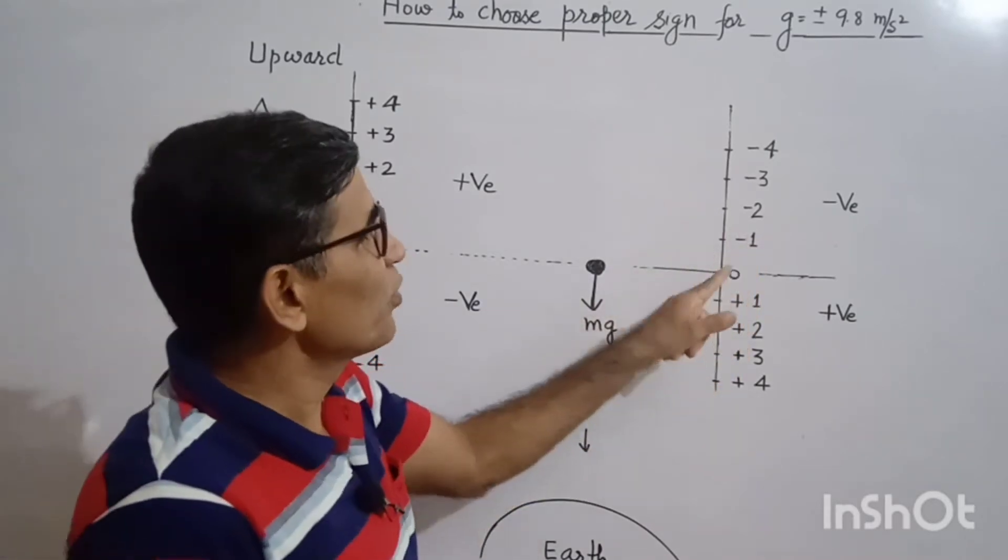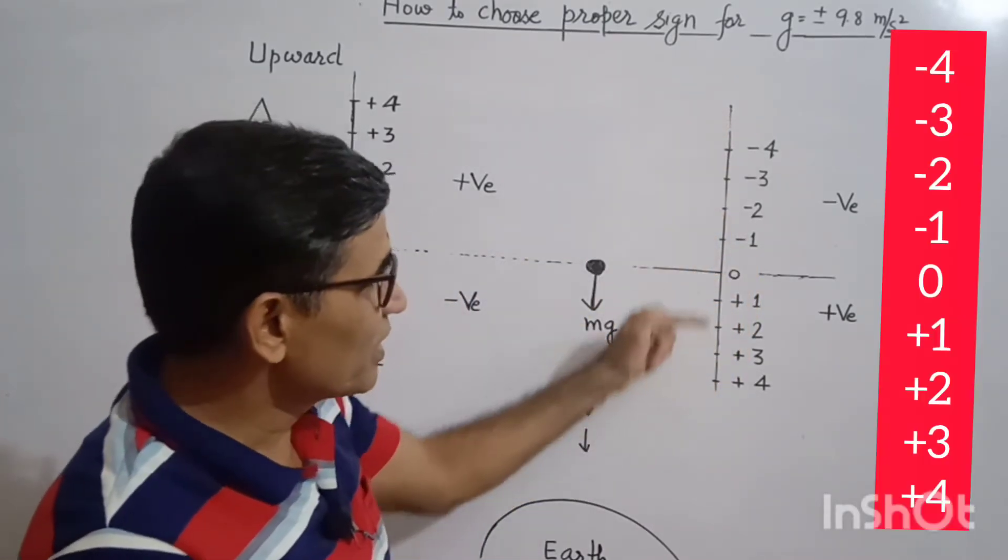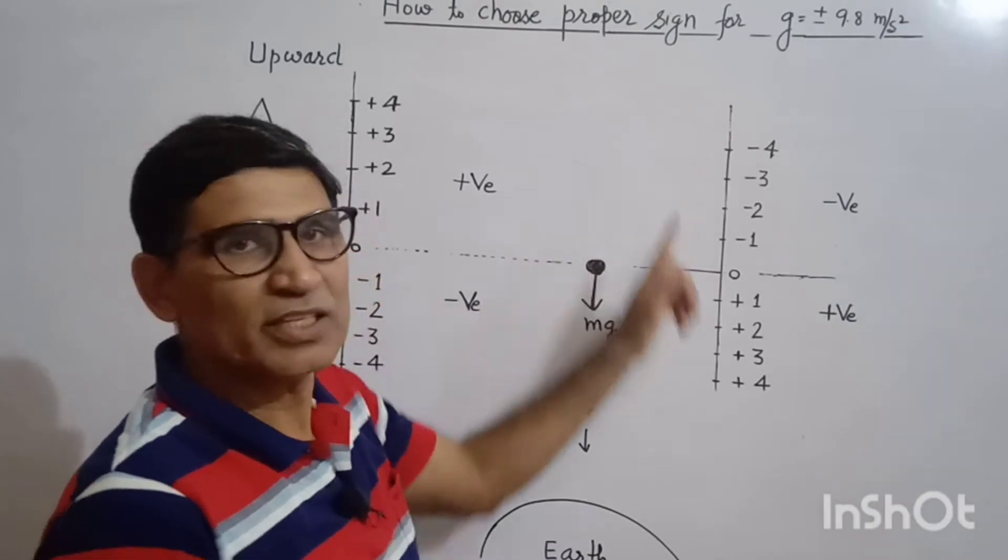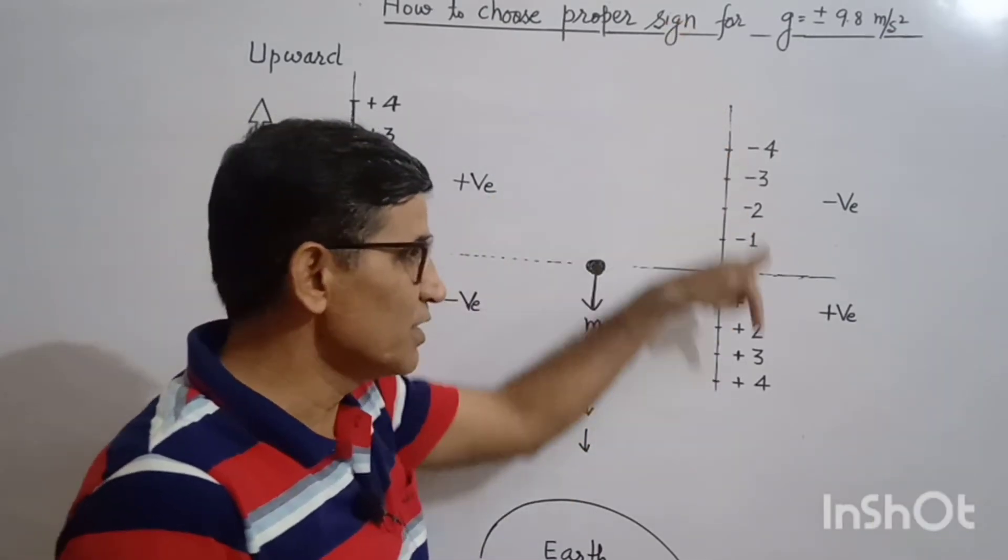In the other case the upward direction is negative. This number is decreasing 4, 3, 2, 1, minus 1, minus 2, minus 3 decreasing in upward direction and increasing in downward direction.